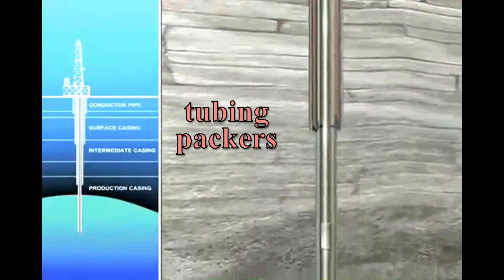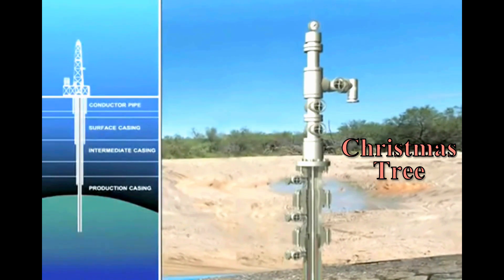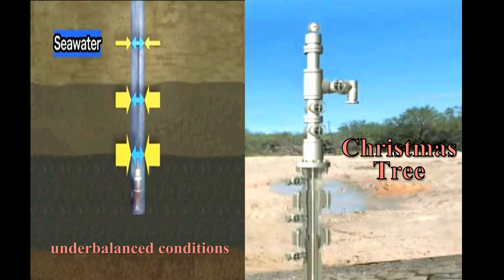This means that the well will be outfitted with tubing, packers, and the Christmas tree to better accommodate perforating in preferred underbalanced conditions.